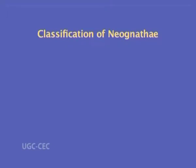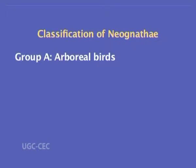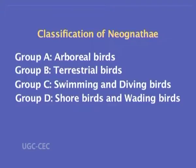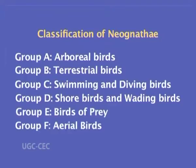Neognathae comprises six groups: arboreal, terrestrial, swimming, shore, prey, and aerial birds. Each group has its own orders, totally making Neognathae a rich combination of nineteen orders.